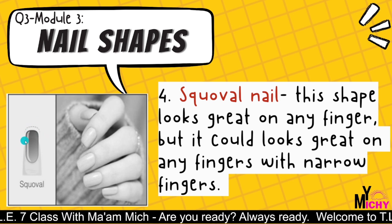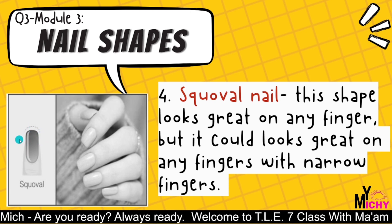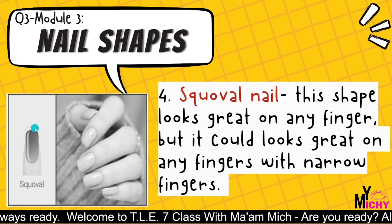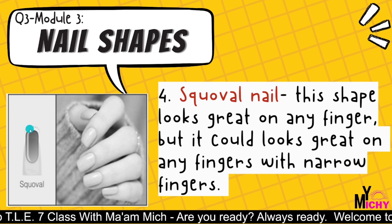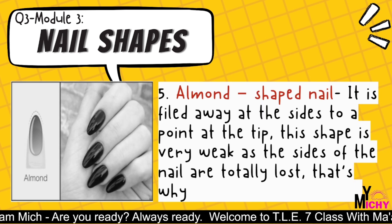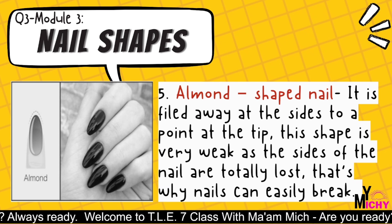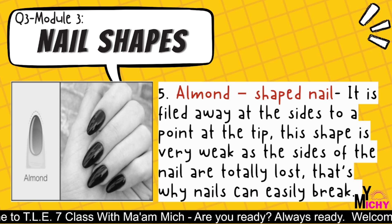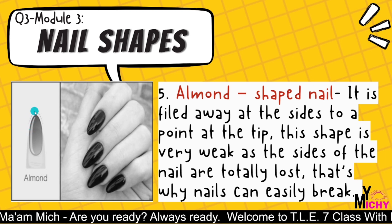The oval nail shape looks great on any finger but especially on narrow fingers. Square plus oval has curved sides and a square top. The almond shape nail is filed away at the sides to a point at the tip. The shape is very weak as the sides of the nail are totally lost, which is why nails can easily break.